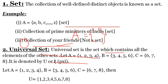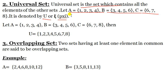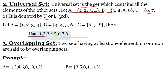Next is universal set. Universal set is the set which contains all the elements of other sets — that means it is a larger set. It is denoted by capital U. For example, if set A, set B, and set C are given, the collection of all elements from A, B, and C is called the universal set. All elements 1 through 8 are present in U. A, B, and C are all subsets of U. Universal set is a bigger set that contains all the elements of the other sets.